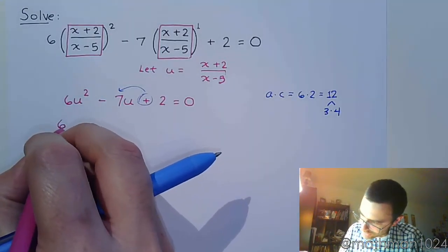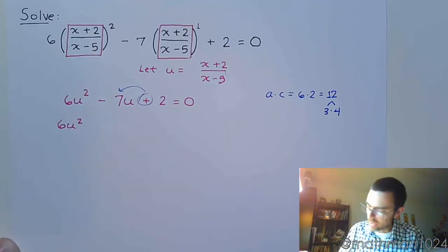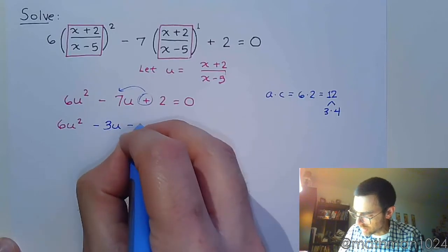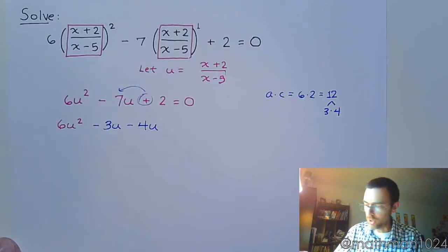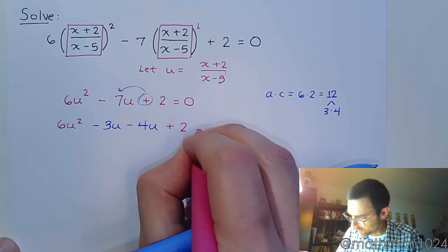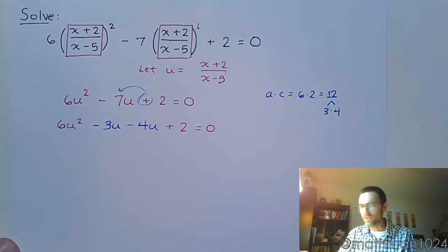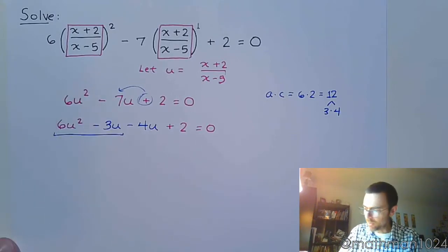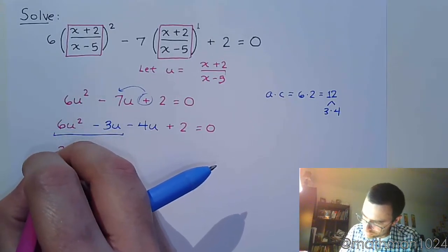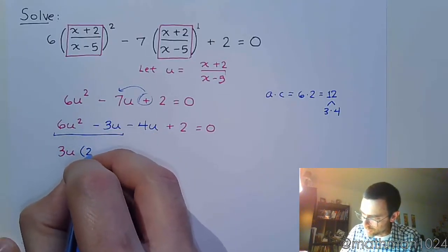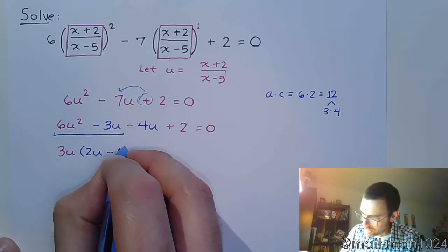So that means this guy's going to split up as minus 3u minus 4u. And hopefully we're doing everything right so that the factoring by grouping works out, and it does come back to the original polynomial. In this first group, the common factor here is 3u. Factor that out, and we have 2u minus 1.